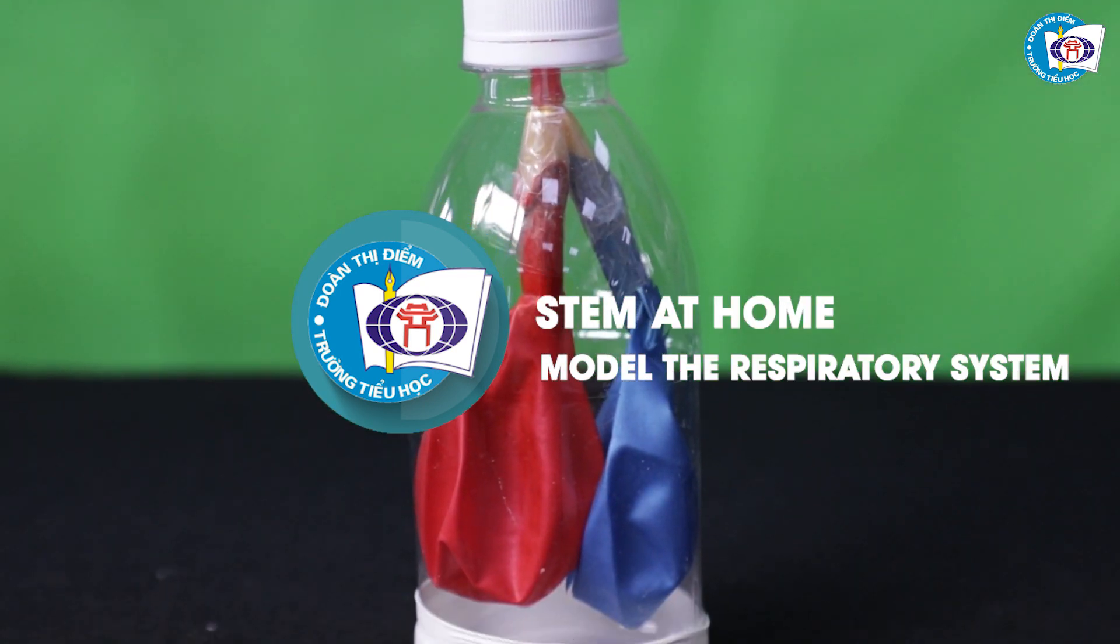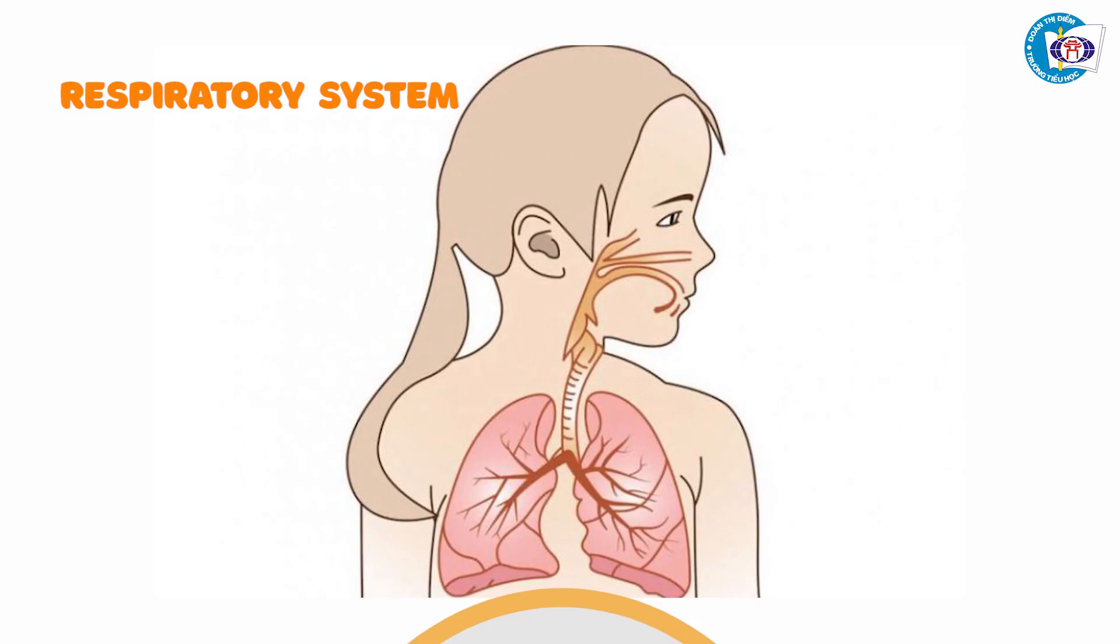Model the Respiratory System. The respiratory system has 4 main parts: the chest, the windpipe,